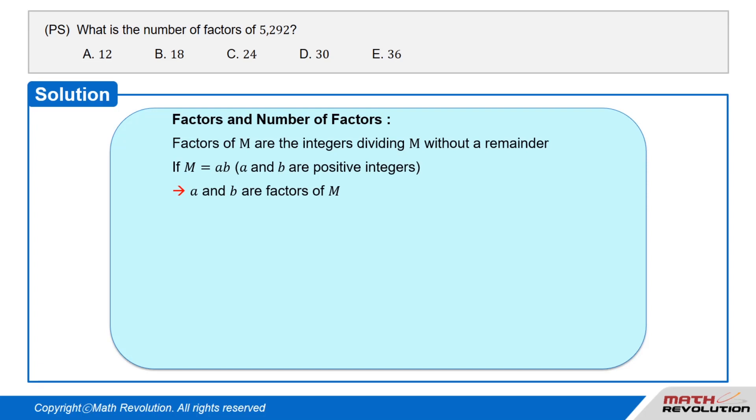Factors of a number, say m, are the integers that can divide m without a remainder. That is, if we have a number m such that m equals a times b, and m, a, and b are positive integers, then a and b are factors of m.